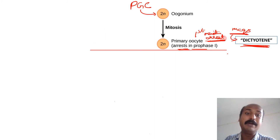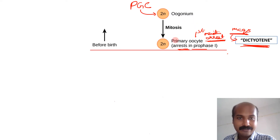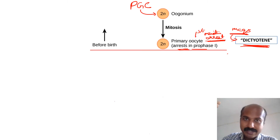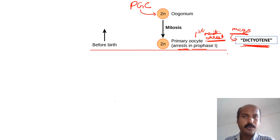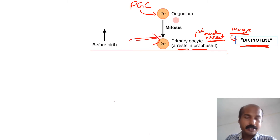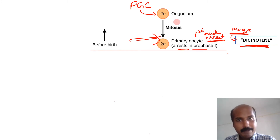A major contrast with spermatogenesis is that this first meiotic arrest occurs before birth. Before birth, all oogonia undergo mitosis to form primary oocytes. So a population of primary oocytes is formed before birth itself. In spermatogenesis, by contrast, the spermatogonium undergoes mitosis to form the primary spermatocyte only after puberty. By birth, no oogonia remain — all have divided into primary oocytes.